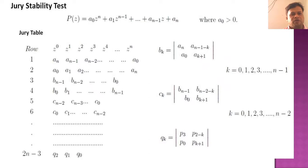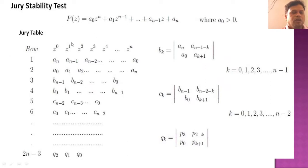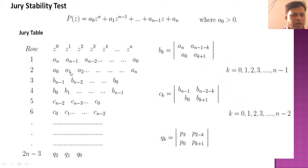The Jury stability test uses the equation P(z) equal to a₀·z^n plus a₁·z^(n-1) plus ... plus a_(n-1)·z plus a_n, where a₀ is greater than 0. The coefficients a₀, a₁, ..., a_(n-1) form rows in the Jury table. We make rows 1 through 6, with variables z⁰, z¹, z², z³, z⁴ as columns. The coefficients are written in order: row 1 has a_n down to a₀, row 2 has a₀ up to a_n, and subsequent rows contain b_k and c_k values found by computing determinants.